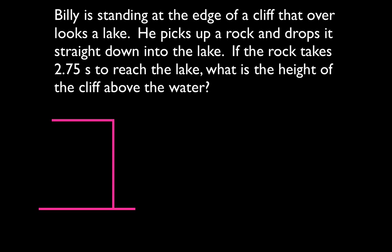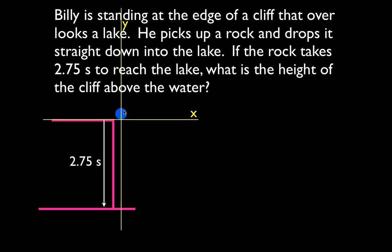For free fall I like to draw a simple diagram. Here's my cliff — this is the height from which the rock is going to be dropped. I like to draw the object. Because it takes 2.75 seconds for the object to reach the bottom, I draw that in. I also like to put an xy coordinate system in. The ball is falling straight down in free fall, meaning no change in position in the x direction, but it is falling in the negative y direction. So my change in position, velocity, and acceleration are all going to be in the negative direction because it's falling down — down in the y direction is usually considered negative.